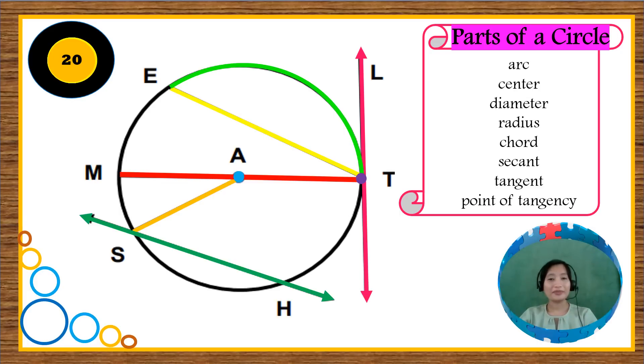Now that you are already familiar with some of the terms related to circles, I want you to match the colors of the lines or line segments to the part of the circle it represents. I will give you 20 seconds to do that. So for you to easily do that, you may just write the part of the circle and then the letter or the color of the line or line segment it represents. Are you ready? Let's start.